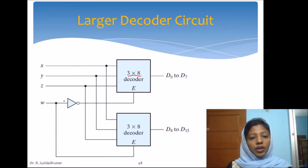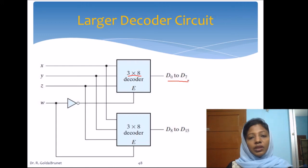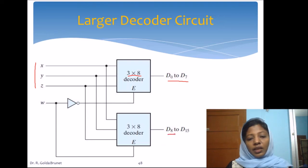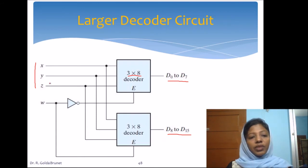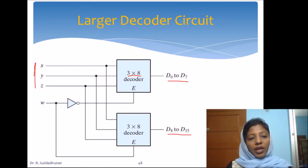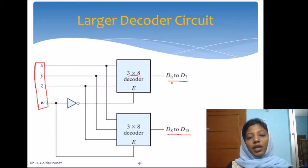We have 3 inputs and one enable input. When this enable is 0, we get the output D0 to D7 based on the values of X, Y, and Z. When W is equal to 1, then D8 to D15 will get the output — any one of those lines will be 1 based on the select lines X, Y, and Z. Thus we can extend the configuration from 3-to-8 to 4-to-16. With enable input, all 4 inputs now act as the input to the decoder and we get output from D0 to D15.